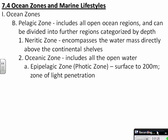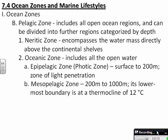The oceanic zone itself is divided into depth zones. The surface layer, called the epipelagic zone or photic zone — because this is where light penetrates — extends from the surface down to about 200 meters. The mesopelagic zone, where 'meso' means middle, extends from about 200 to 1,000 meters, and its lowermost boundary is usually at the thermocline at about 12 degrees Celsius.